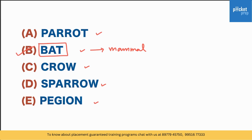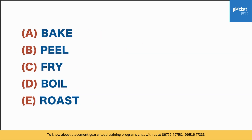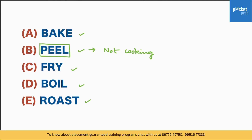Look at these words: bake, peel, fry, boil, roast. Except peel, all the other words are used for cooking. Peel is not used for cooking, therefore peel is the odd one out.